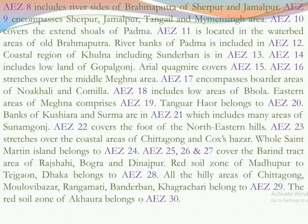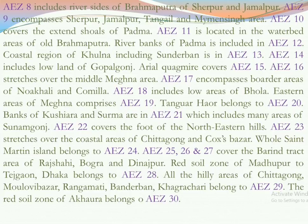AZ11 is located in the wetland areas of the Old Brahmaputra. River banks of Padma are included in AZ12. The coastal region of Khulna including the Sundarbans is in AZ13. AZ14 includes the lowland of Gopalganj. Arial Beel covers AZ15. AZ16 stretches over the middle Meghna area — only the middle part of the Meghna river, not the start or end points, belongs to this zone.